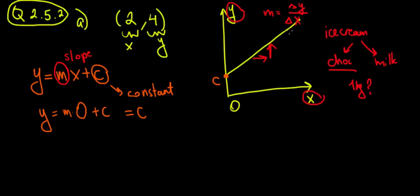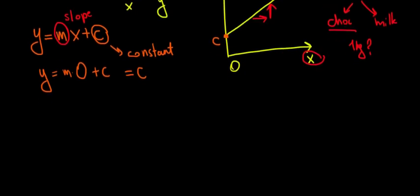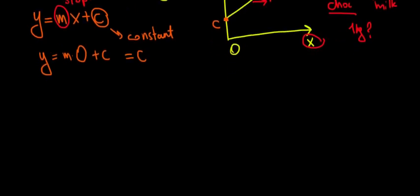Let's use this theory to solve the three parts: a, b, and c. In part A, we have the point (2, 4). Let's plug it into our line: y equals 4 and x equals 2, which gives us 4 equals m times 2 plus c.